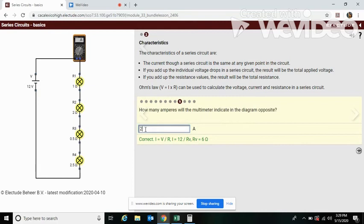All right, so this one here, it's easier just to show you this way. Okay, so how many amperes will the multimeter indicate in the diagram opposite? That's this. So in a series circuit, you're going to add up all the resistance: one plus two is three, 3.5, 3.5 plus 2.5 is six.